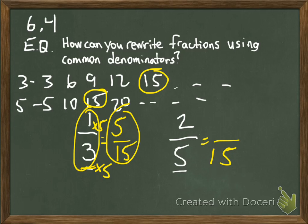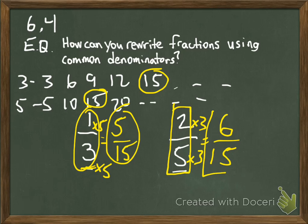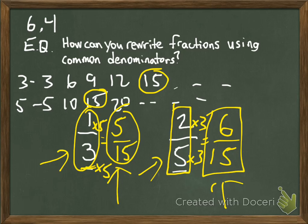Now for two-fifths: two-fifths equals blank over 15. We need to find the missing numerator. The 5 turned into a 15 — it was multiplied by 3. So we multiply the numerator by 3 as well: 2 times 3 equals 6-fifteenths. Two-fifths and six-fifteenths are the same exact amount. We found the common denominator 15 and made equivalent fractions, rewriting the fractions using that common denominator.